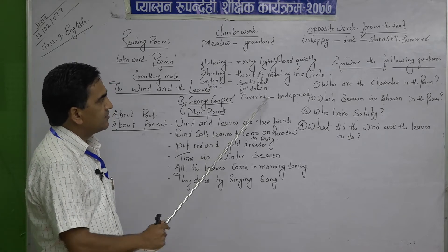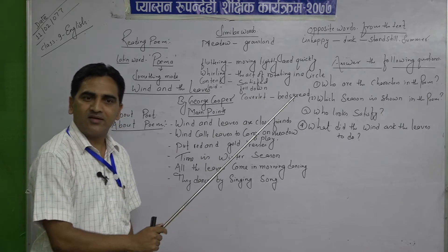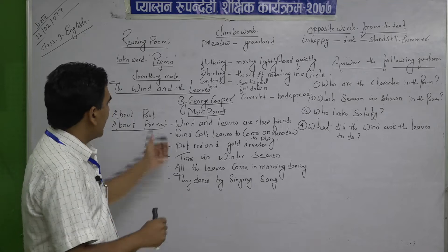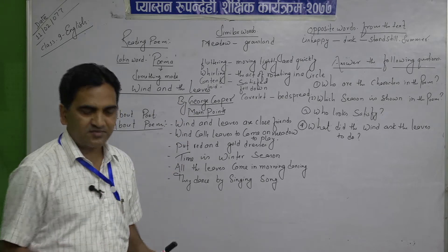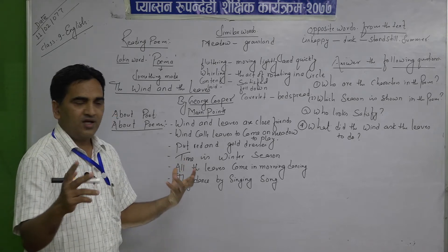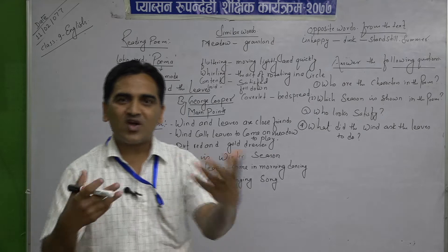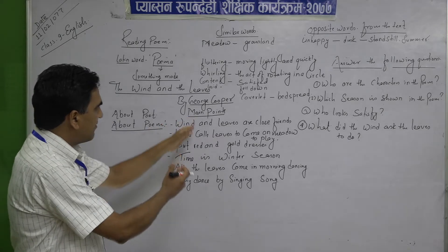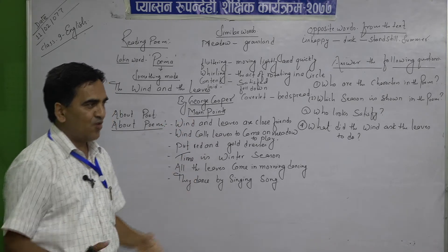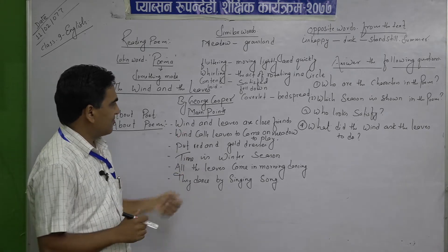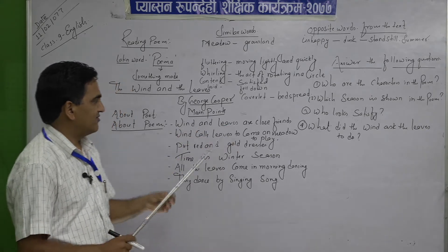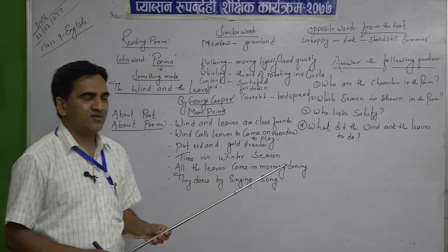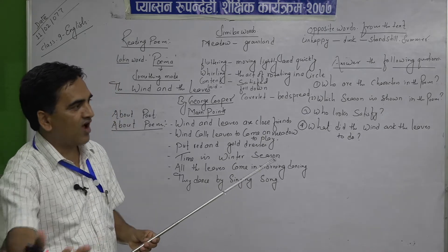Now, students, turn the page of your books and see the lines of the poem. What do you find? The two characters — wind and leaves — are talking like friends. I have written some points to understand the poem very easily. Wind and leaves are close friends. They are playing together on the meadow.